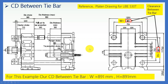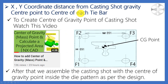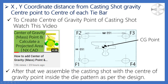According to our calculated required machine tonnage we select a machine. In this example we select a 530-ton UBE machine. Now we know the machine tonnage and brand, so we can get the manual and find the center distance. We get a distance of 891 mm — the clearance between tie bars is the same for both X and Y directions. We call it W for the X direction and H for the Y direction. Next, we need to know the casting shot gravity center point to find the XY coordinate distance from the gravity center to each tie bar center.